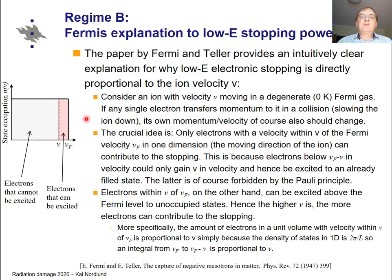We have an ion with velocity V moving in a Fermi gas — a degenerate zero-Kelvin Fermi gas. From solid-state physics, at room temperature the Fermi distribution is practically that of a degenerate zero-Kelvin Fermi gas, essentially a box function of state occupation numbers.